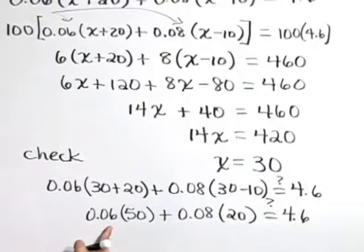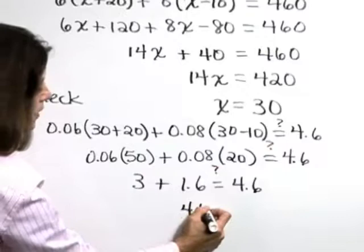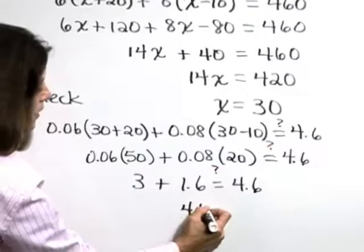Well, 0.06 times 50 yields the number 3, and 0.08 times 20 gives 1.6, and we can see that, yes indeed, we get 4.6 on both sides. This is a true statement, so we feel comfortable that the correct solution is 30.